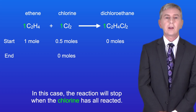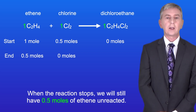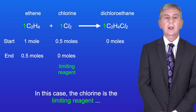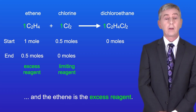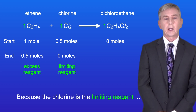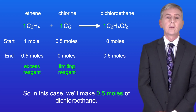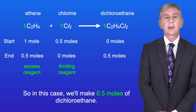In this case the reaction will stop when the chlorine has all reacted. When the reaction stops we will still have 0.5 moles of ethene unreacted. So the chlorine is the limiting reagent and the ethene is the excess reagent. Because the chlorine is the limiting reagent, the amount in moles of chlorine will determine the amount of product that we make. So in this case we'll make 0.5 moles of dichloroethane.